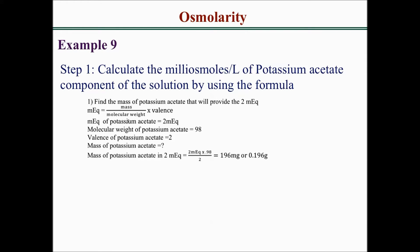Our milliequivalents of potassium acetate is 2, and the molecular weight is 98. The valence of potassium acetate is 2, because potassium is a cation producing +1 while acetate is an anion producing -1, so to balance the equation they give a valence of 2. Making mass the subject of the formula: mass equals 2 milliequivalents times 98 divided by 2, giving us 98 mg or 0.196 grams.